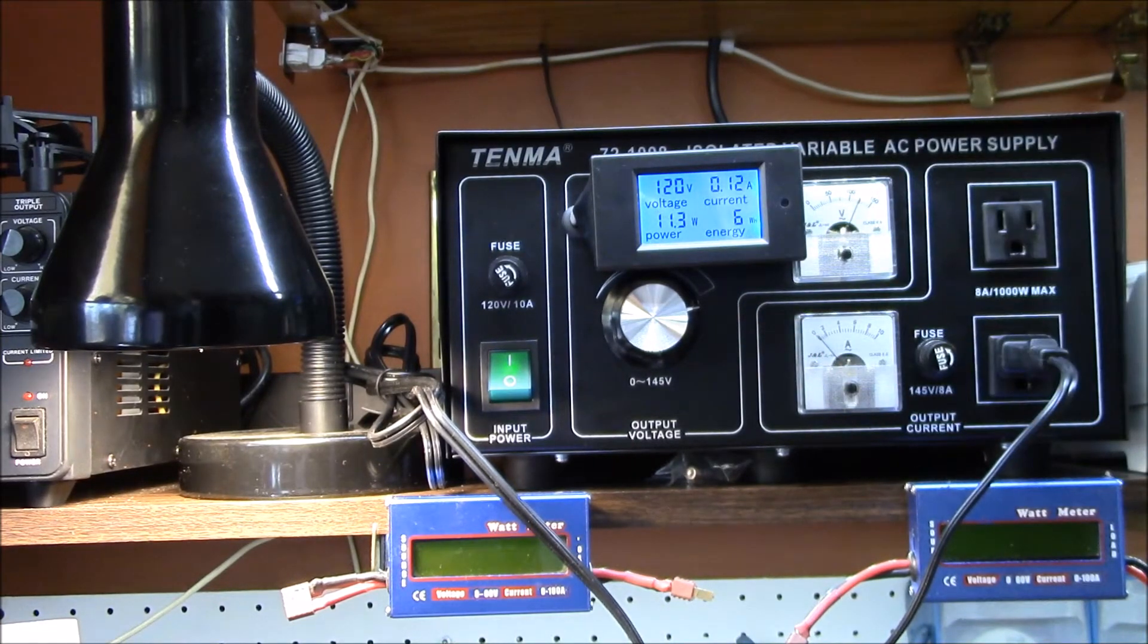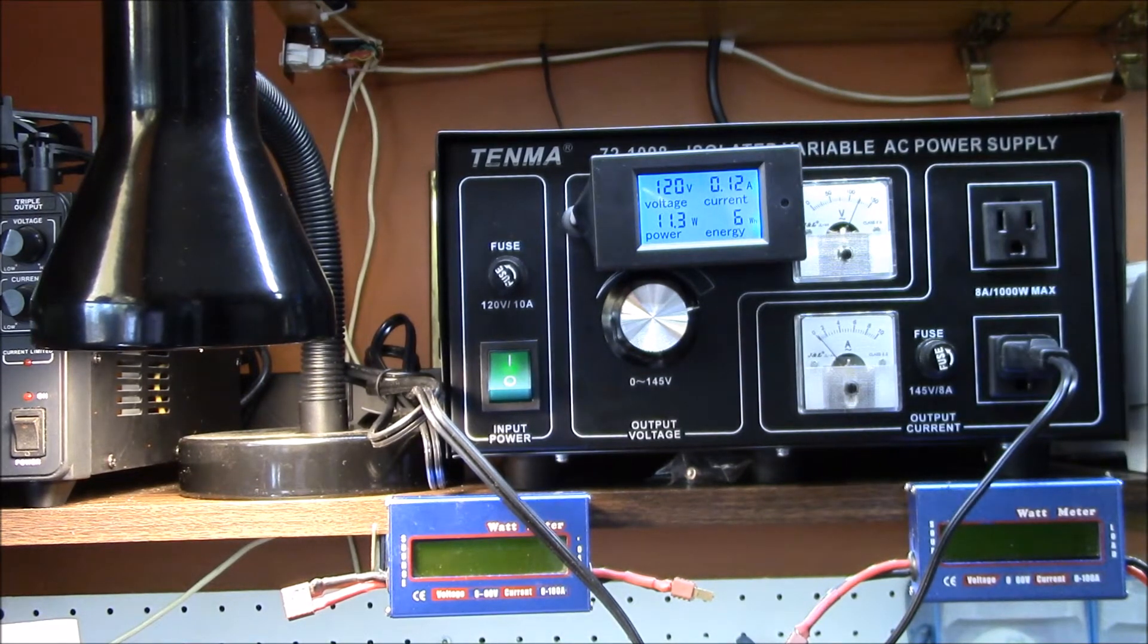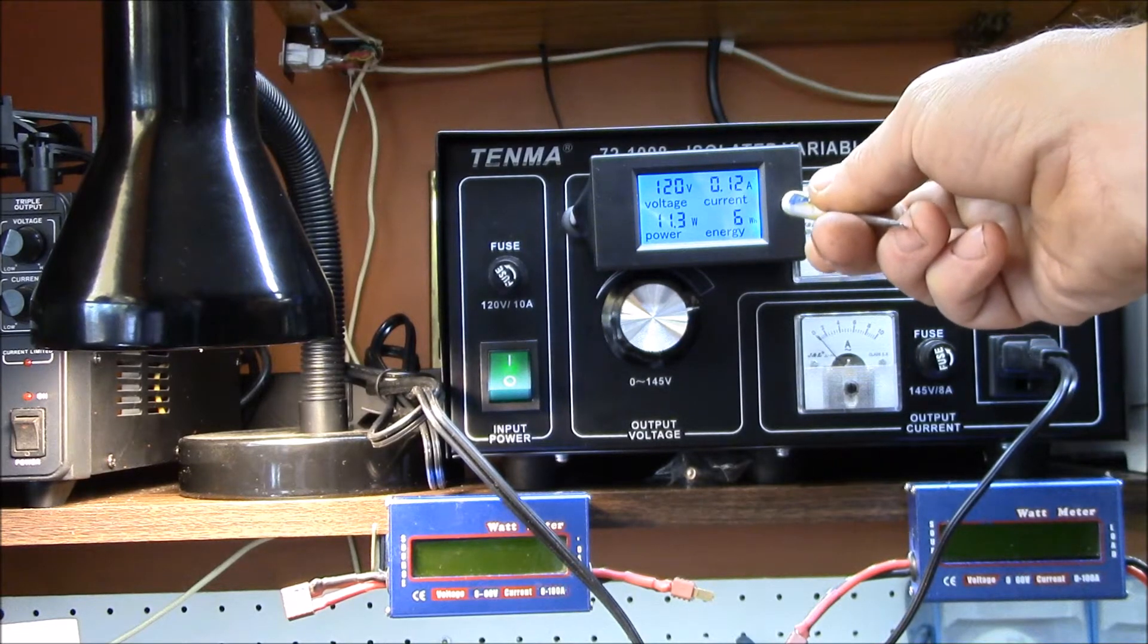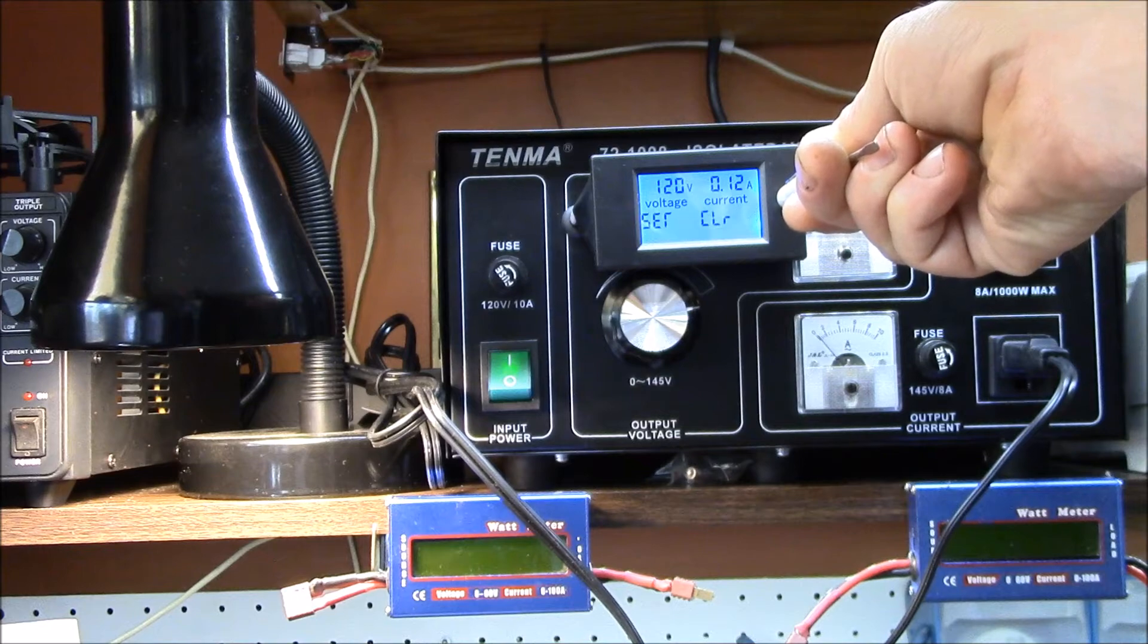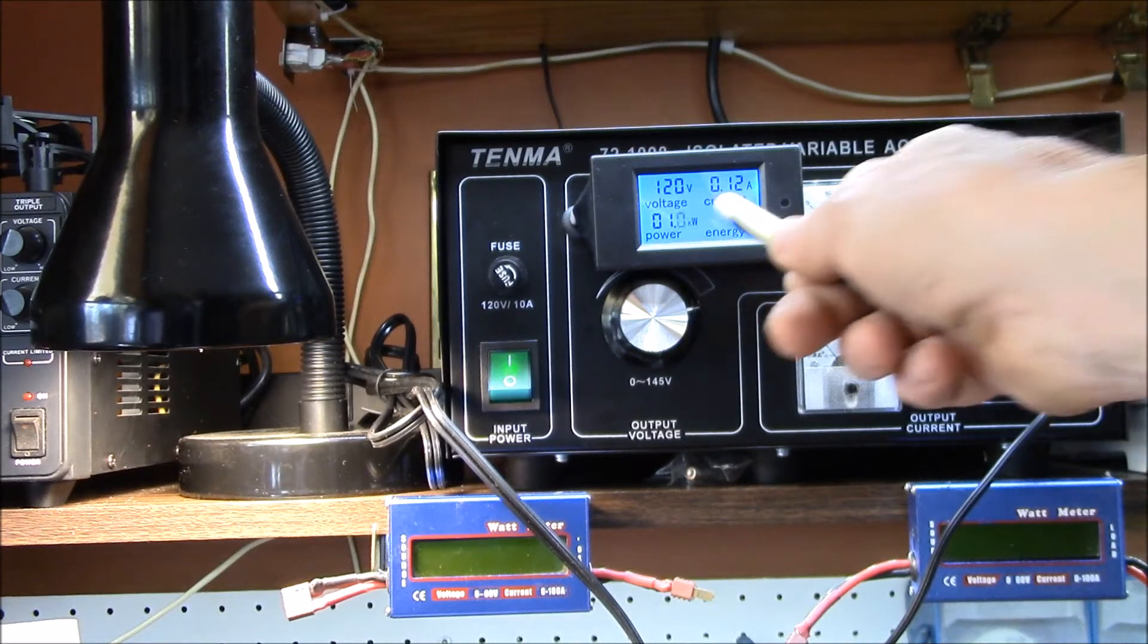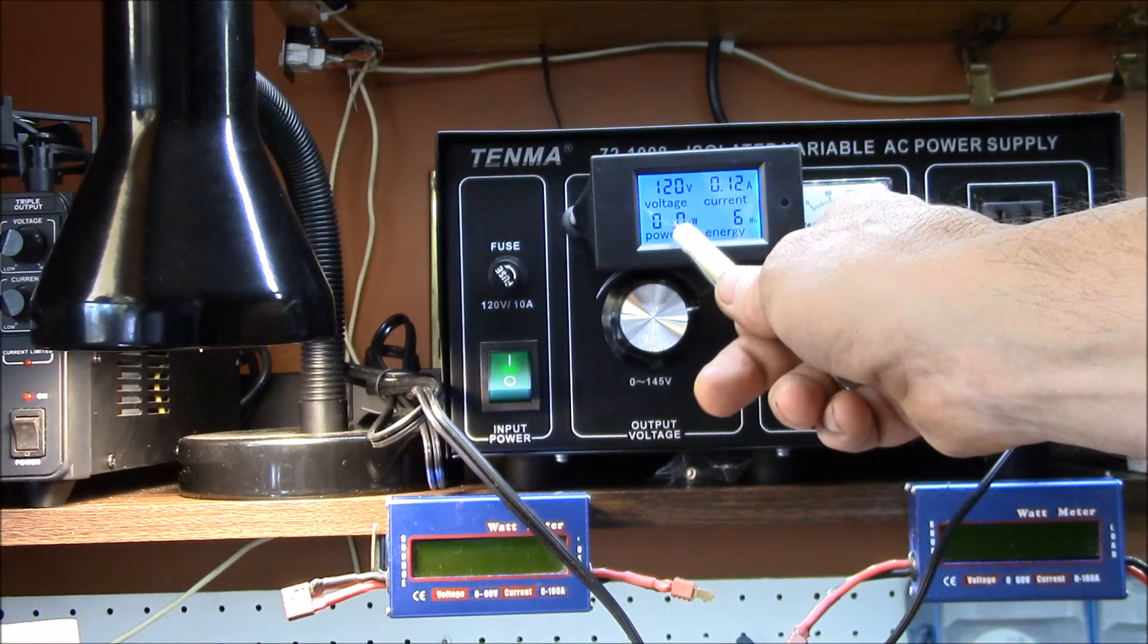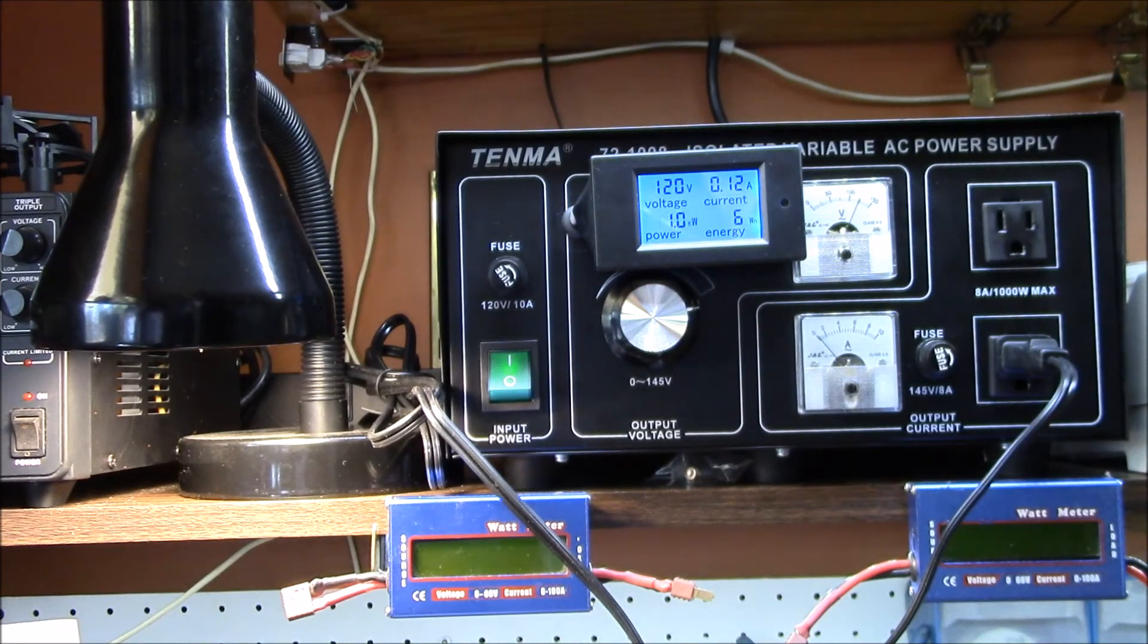There's also another feature in this device: a power limit alarm that you can set. The way you get to that is you hold the button down for five seconds and you can see it said 'set CLR'. Right now you can see it's flashing here. The default here is 22.0 kilowatts.